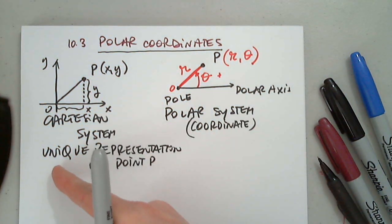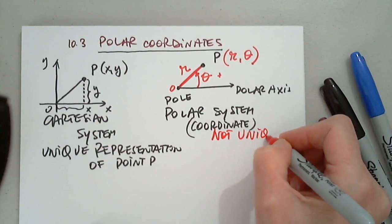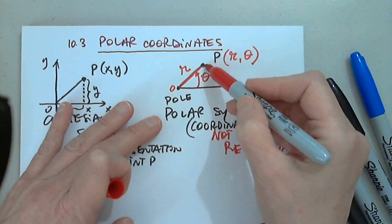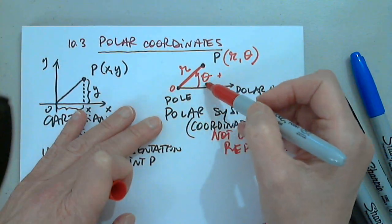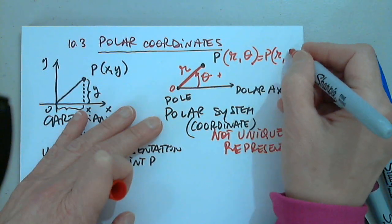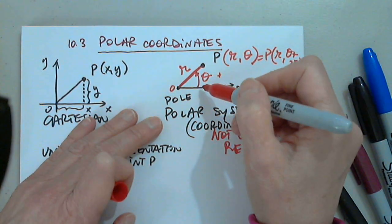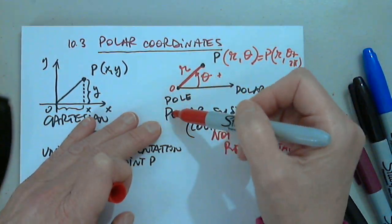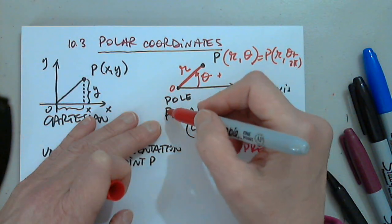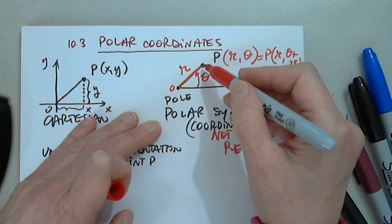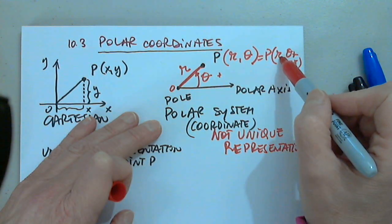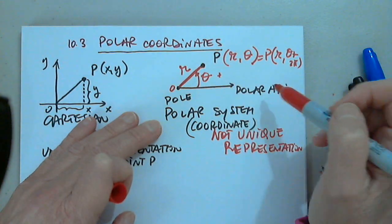Why is this not a unique representation? Because I can represent this point as (r, θ + 2π), which is the same as P. It's also the same as (r, θ + 4π), or (r, −2π − θ), and still land at the same point. There are also other ways of representing the same point with a negative distance.